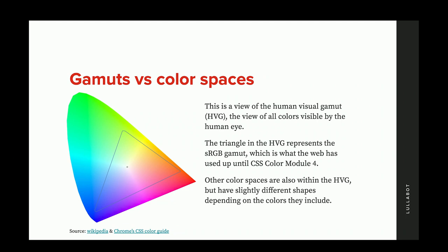There are other color spaces that are within this human visual gamut — all of them fit within it, but they're represented as triangles for the most part. For example, P3 might be a taller triangle that hits the blues more, supporting a brighter blue. Different gamuts support different ranges of colors.